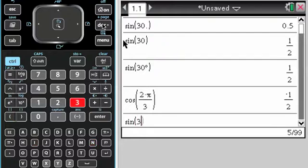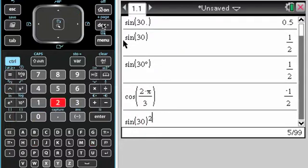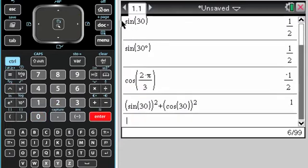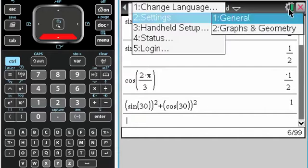And that will let you change it again. So I can change it back to degrees. And now I can do, you know, the sine of 30 squared plus the cosine of 30 squared. And I'm in degrees, so I get that answer if I want to change back.